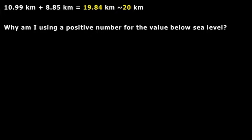So if we take the highest and lowest elevations on the surface of the Earth and add them together, we get about 20 kilometers. Why am I using a positive number for the value below sea level? Because obviously if you're going below sea level, the Challenger Deep, why am I not using a negative number?